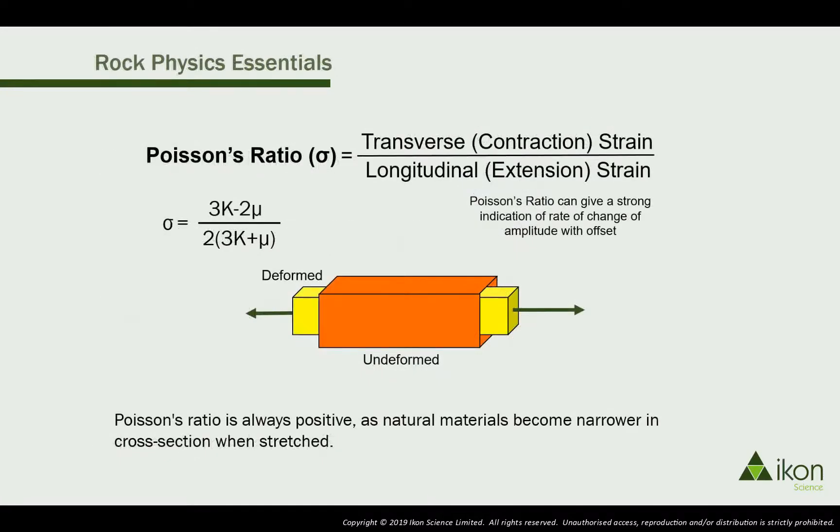Poisson ratio is a particular favorite as it's highly sensitive to hydrocarbons and has fixed bounds between 0 and 0.5. Values outside these limits indicate bad data, so it makes an excellent QC property too.